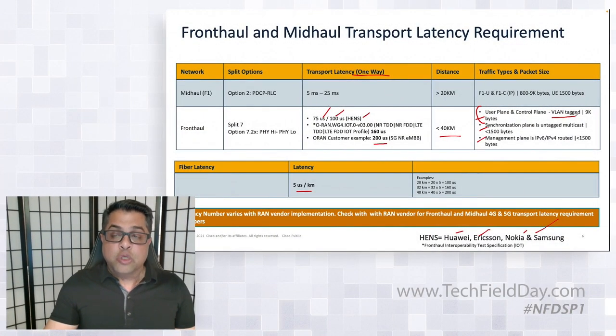With ORAN, that number may go a little bit up — if it goes to 160 to 200 microseconds, you can go up to 30 kilometers. That's why I put less than 40 kilometers for front haul. There are different traffic types in front haul: VLAN-tagged user and control plane is layer two traffic today, packet size can be a jumbo frame. Synchronization plane is untagged multicast. Management plane is IPv4 or IPv6. 95% of traffic is user and control plane. There is a roadmap for vendors to put user and control plane into layer three, but today it is layer two — the only layer two traffic in a mobile network today.